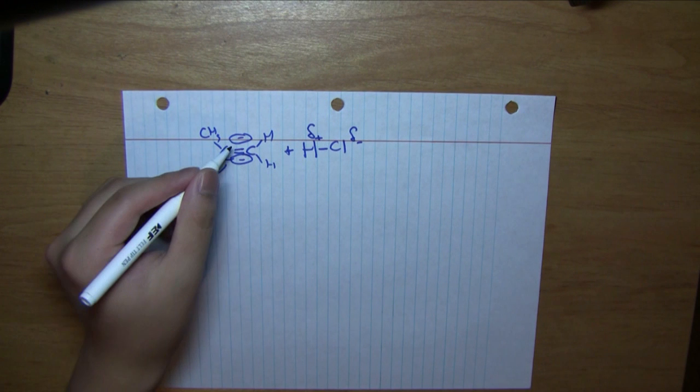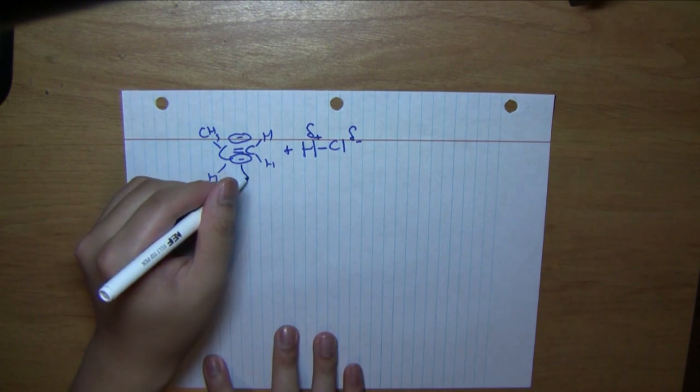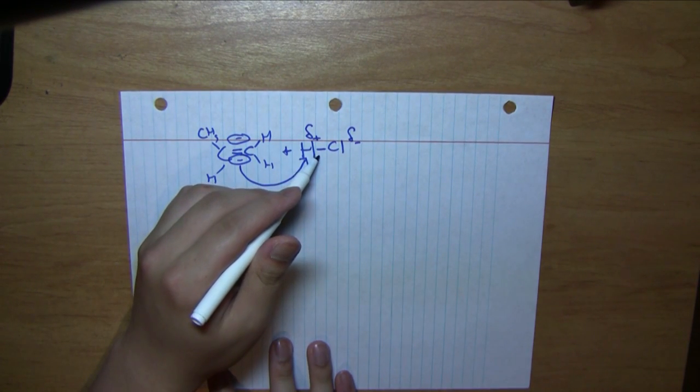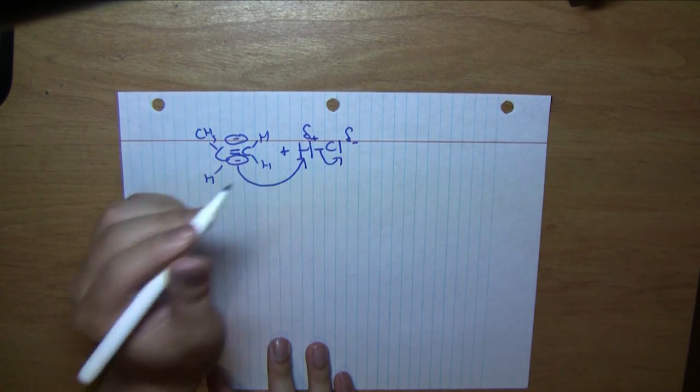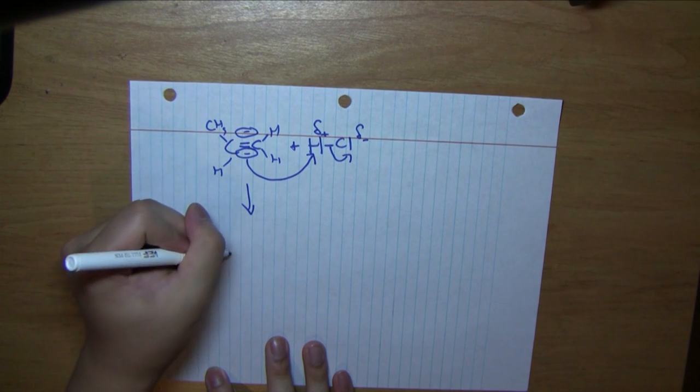We can have either side of the double bond attack the hydrogen, and then the electrons from the bond between hydrogen and halide go completely towards the halide. So the intermediate in this reaction would simply be this.